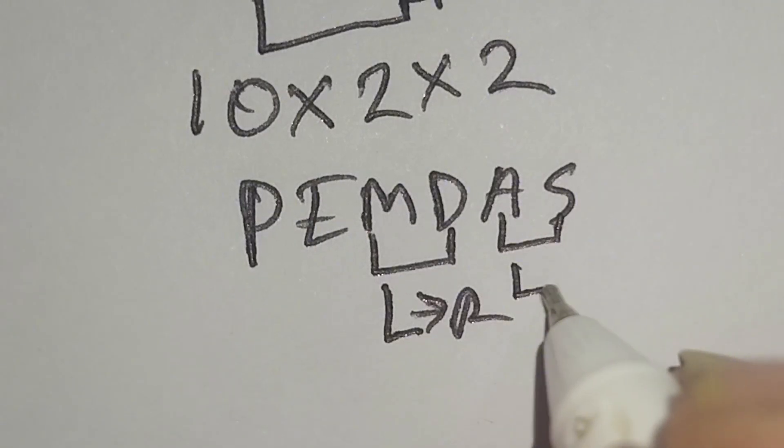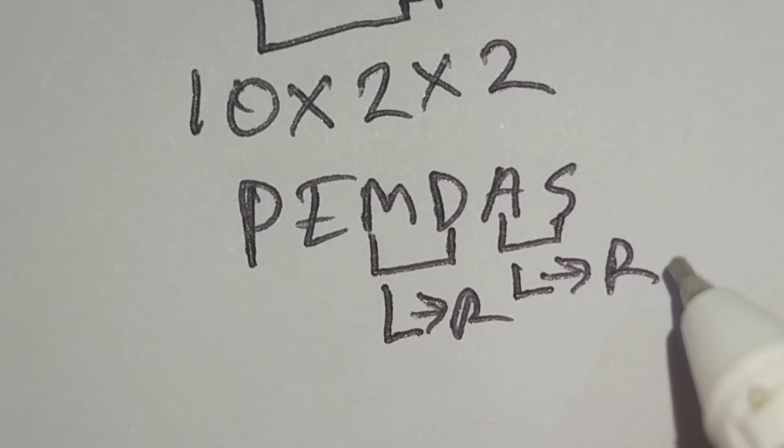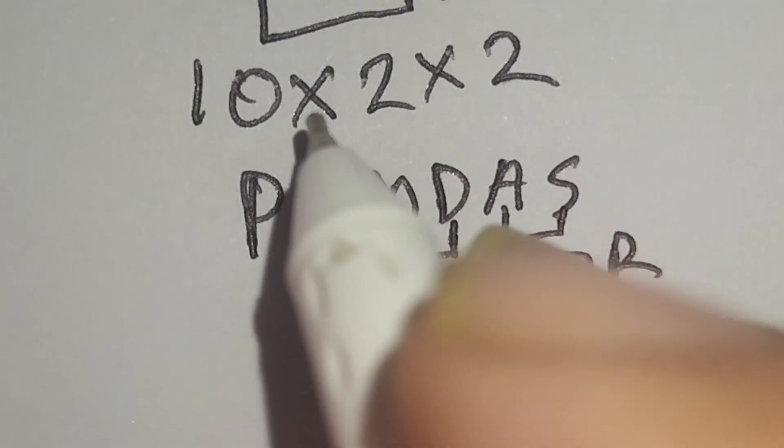And addition and subtraction have the same priority, for this we have to work left to right also. Therefore, at first we have to work with this multiplication, then multiplication.